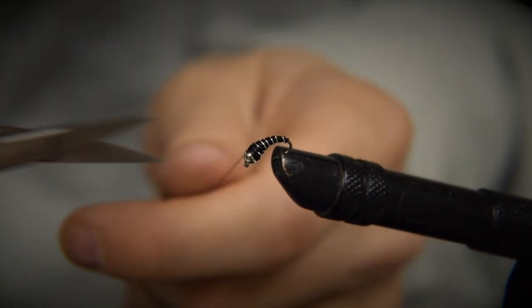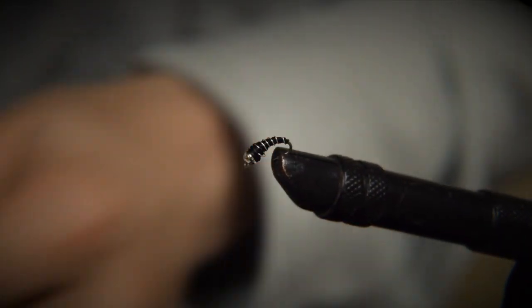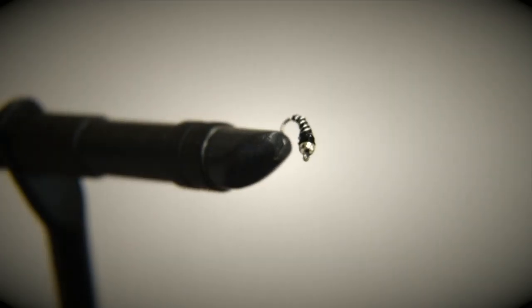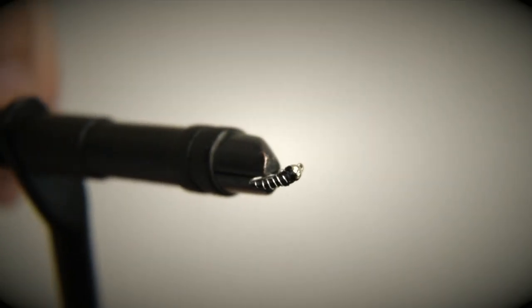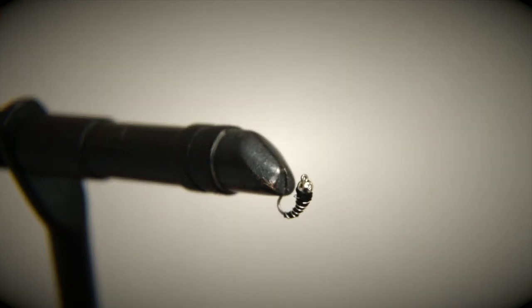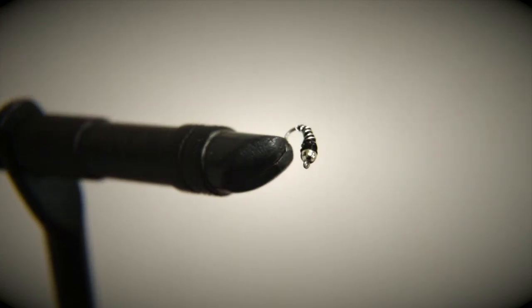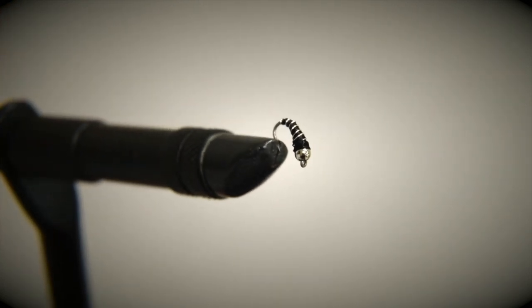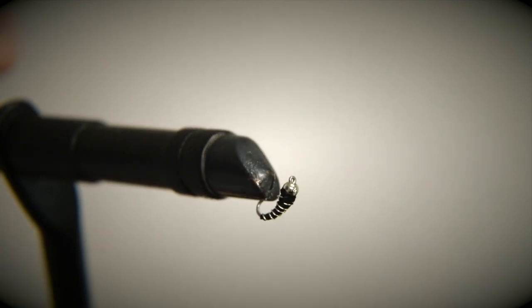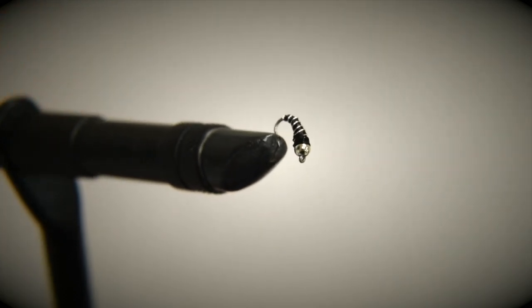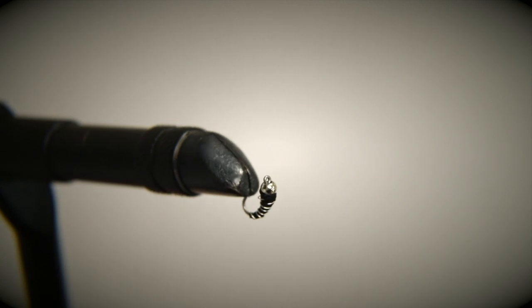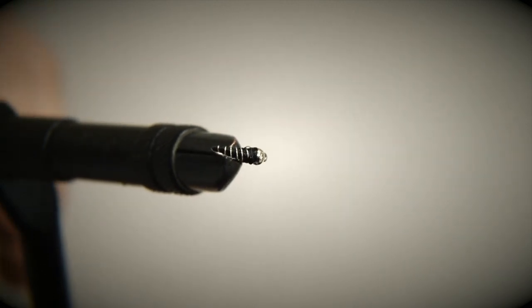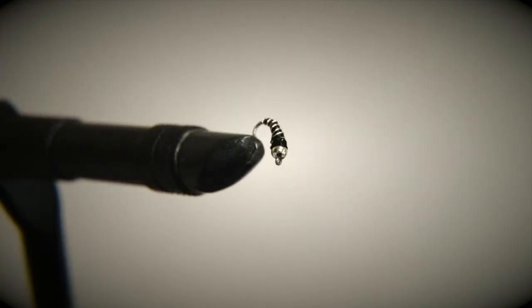All right, once we're done with our last step, we'll go ahead and give that a little snip right up close. And that, CYO family, is how we're going to tie a zebra midge today. If you ask me, that looks awesome. That's definitely a success that I can go home and celebrate, or more importantly, I can celebrate out here on the CYO ponds when we reopen. Thanks for learning with us today, CYO family, and we hope to see you soon out here at CYO.